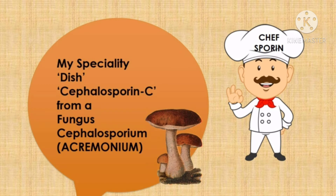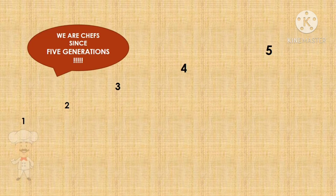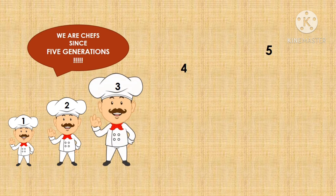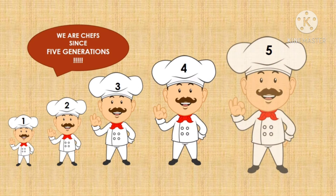Chef Sporine was specialized in making a dish called cephalosporin C, which he used to make from a fungus called Cephalosporium, now also known as Acremonium. Chef Sporine has been preparing cephalosporin preparations since five generations, and according to the generation, these preparations were classified into first, second, third, fourth, and fifth generation. Each successive generation differs from the previous by the scope of antibacterial activity.